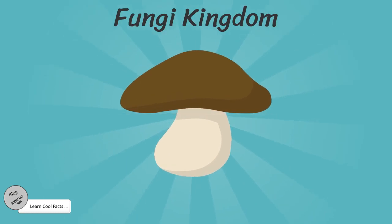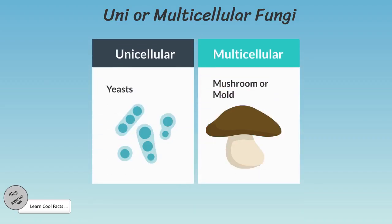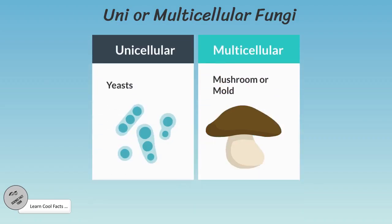Fungi are neither animals nor plants. Fungi can be unicellular, made of one cell, or multicellular, made of many cells. Yeast is a good example of unicellular fungi. Mushrooms and molds are examples of multicellular fungi.